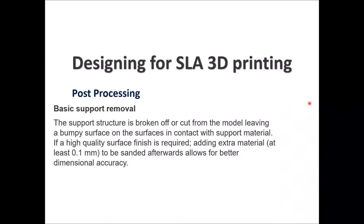The most common post-processing step is basic support removal — you remove the support structure by breaking it off or cutting it from the model. This will leave some bumpy surfaces, especially on surfaces that were in contact with the support material. If you need a high-quality surface finish, you need to add extra material — plan for an extra 0.1 mm of thickness, length, and width — so you can do all kinds of post-processing without affecting the original dimensions.